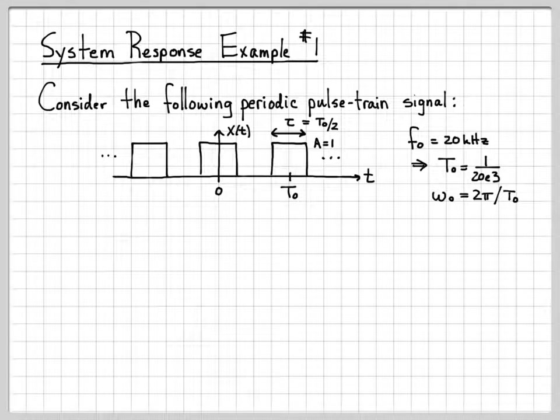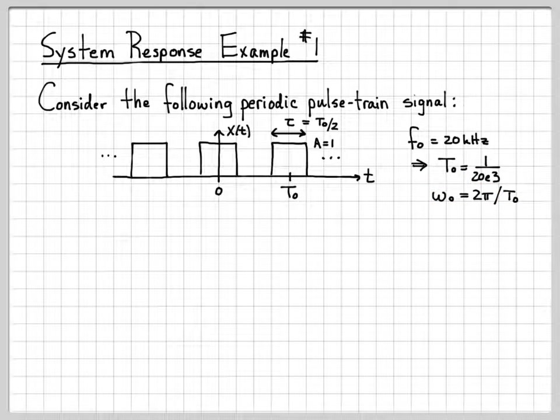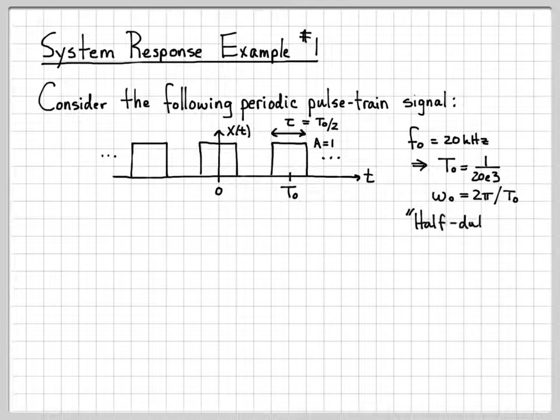We can also compute the radial fundamental frequency if we want as well. Now that we know t0, we can compute the fundamental frequency in radians as 2 pi over t0. Or we could also just take that number and multiply by 2 pi f, since omega is always equal to 2 pi f. We'll use this here in just a little bit when we do our Fourier series representation. We usually do that in the omega domain, so we'll need omega naught.